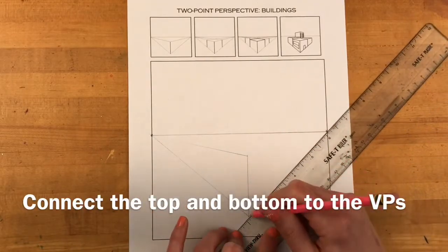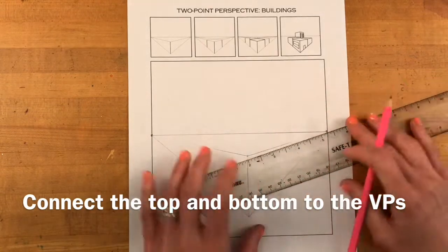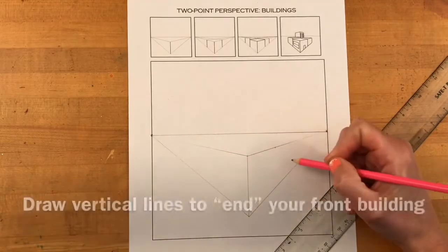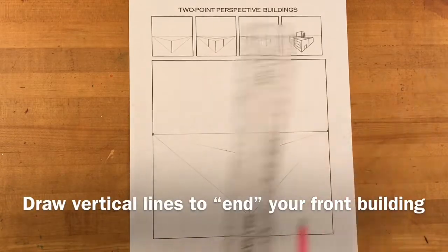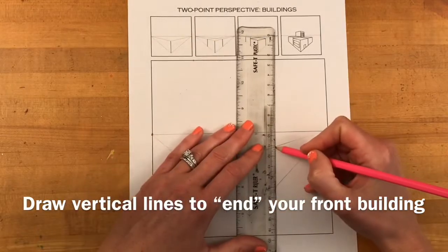This is the same process that you would have used to create a box below the horizon line on your box worksheet. Next you're going to decide how wide you want the sides of your building to be and draw vertical lines to end the building.